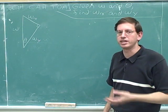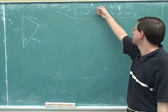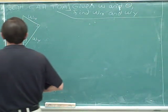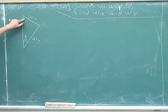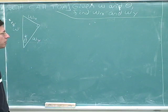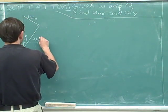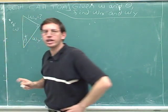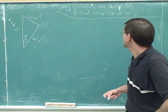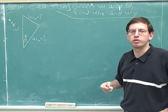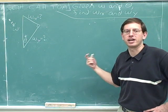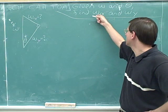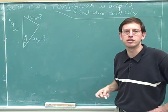This is another problem where we haven't been given any numbers — we've just been told to pretend we've been given numbers for w and theta. Let's use asterisks to indicate that we're pretending we have a value for w and a value for theta, so we're focusing on theta, not the other angle. Use question marks to indicate what the question is asking for: w sub x and w sub y. Our final answers will be algebraic expressions using only the variables w and theta — we are not allowed to use w sub x or w sub y in our final answers.